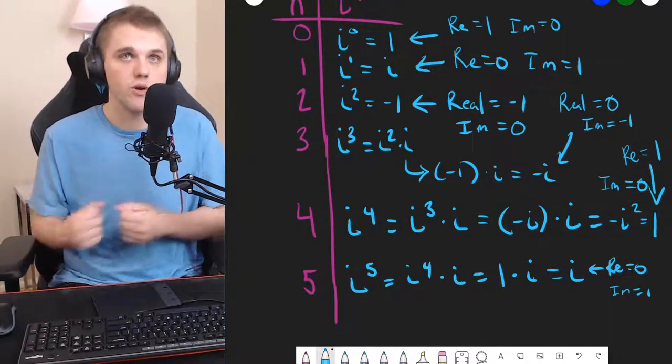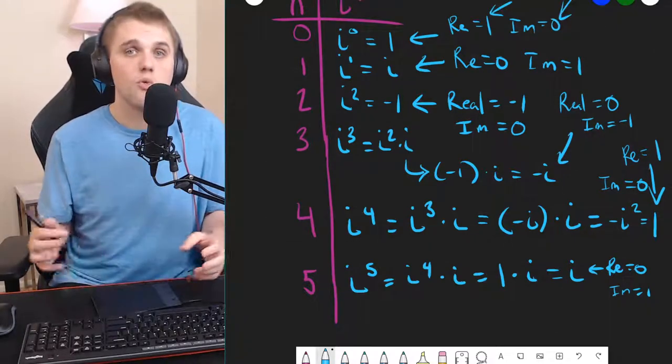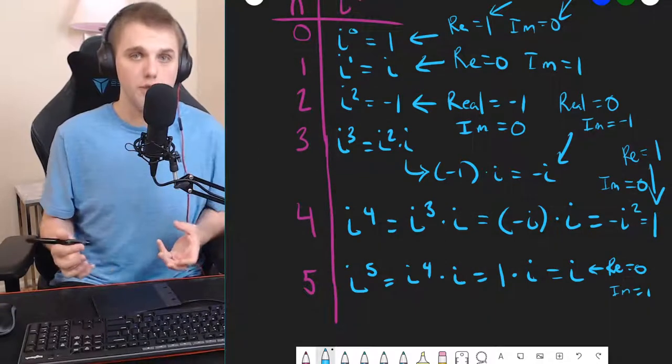So, it's 0, 1, 0, negative 1, 0, 1, 0, negative 1, 0, 1. So, let's try to represent this relationship with some formula.